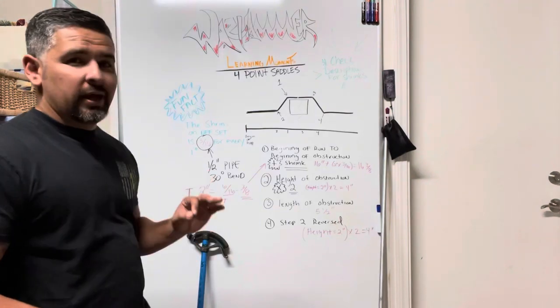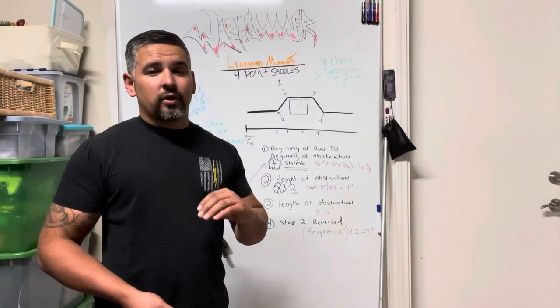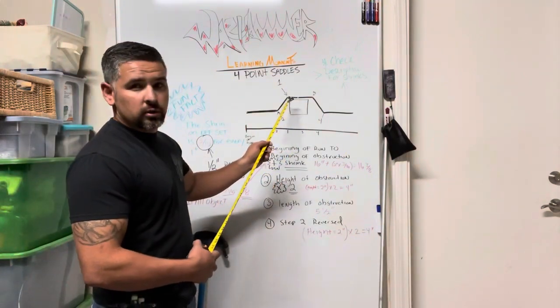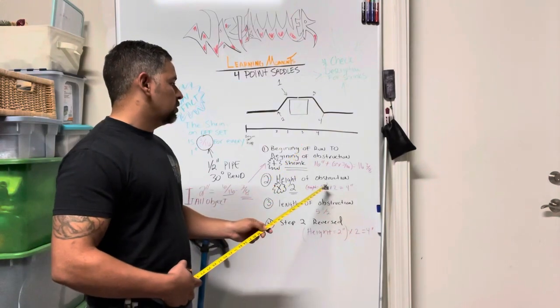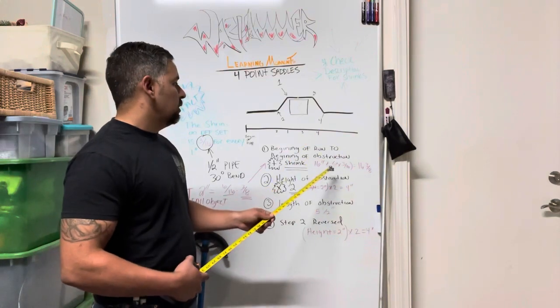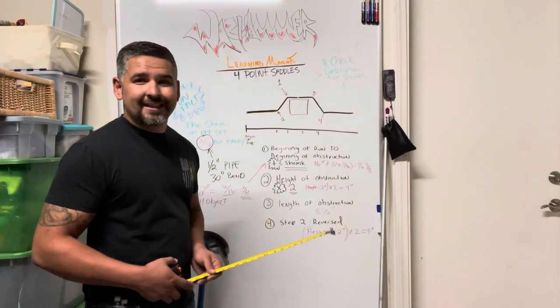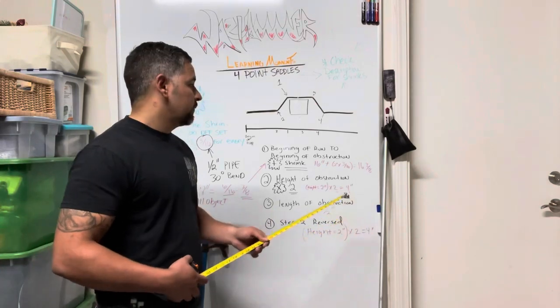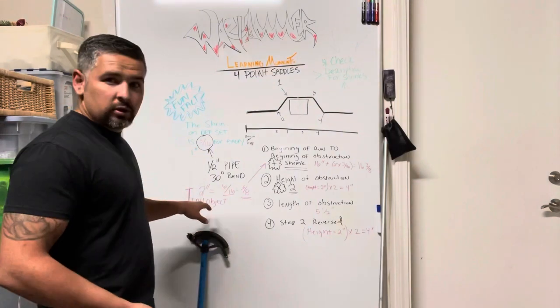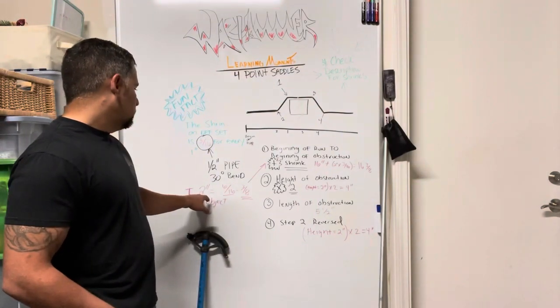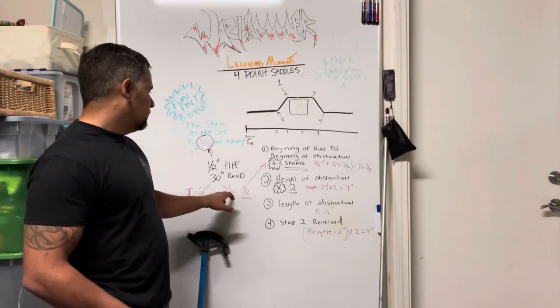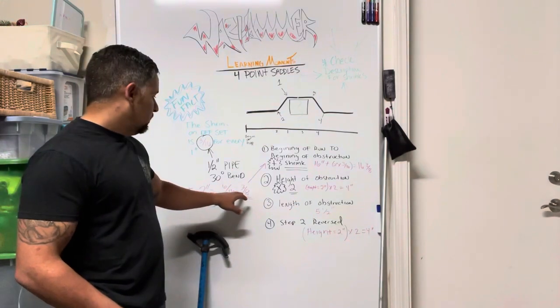So you add 3/16 for every inch of your obstruction. So if it is a 2 inch obstruction, which in this case it will be, if it's a 2 inch obstruction, you times that by 3/16, which comes out to 3/8. So how you do that, if you look over here, it's going to be 2 inches. So 2 times 3/16 equals 6/16.